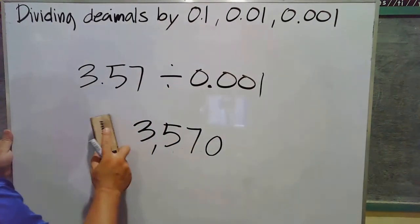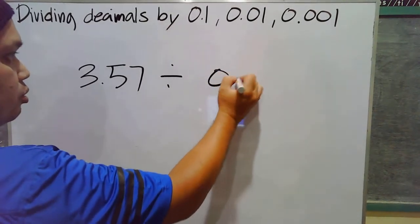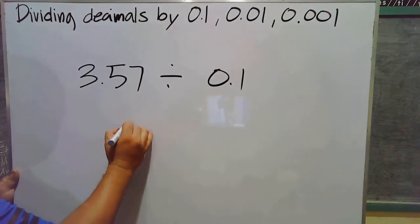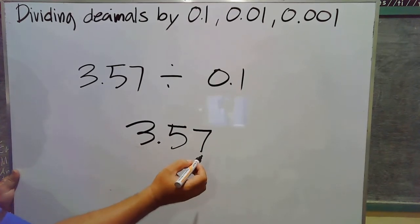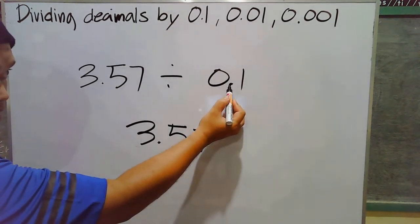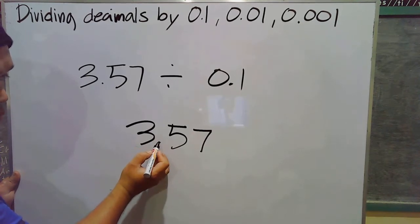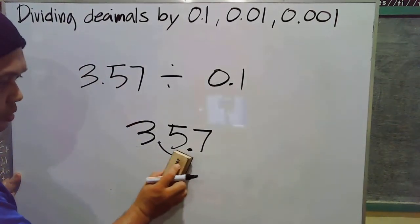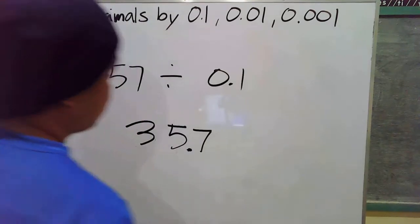Now, how about if we divide 3.57 by 0.1? Same process. Just copy the dividend, which is 3.57, and move the decimal point to the right depending on how many digits after the decimal point the divisor has. In this case we have one digit only, so we move the decimal point one step to the right — that's between 5 and 7. Our answer will be 35.7.